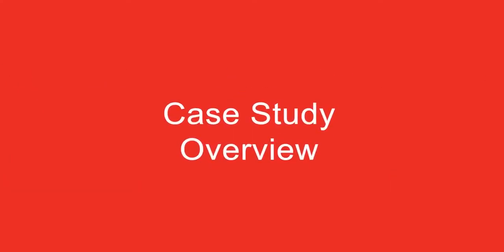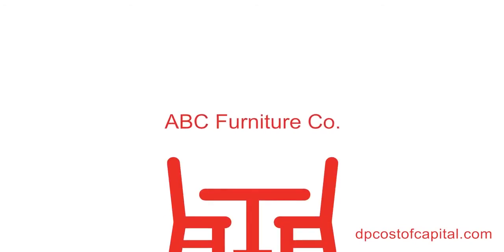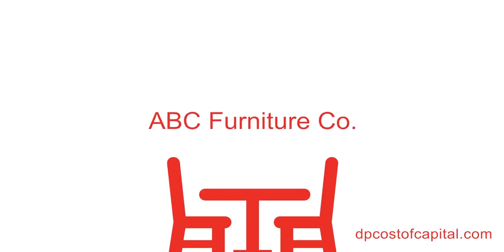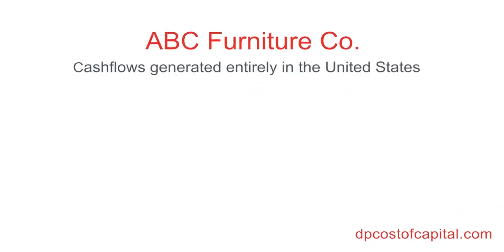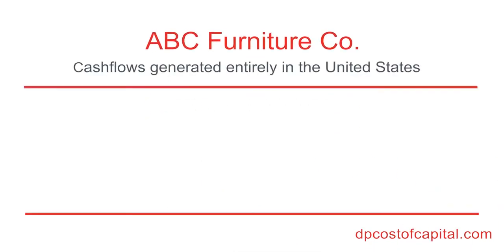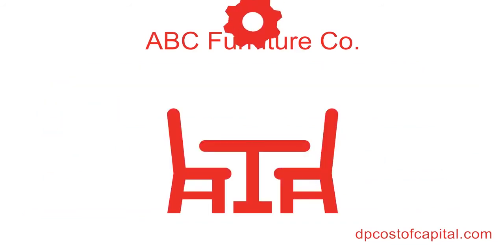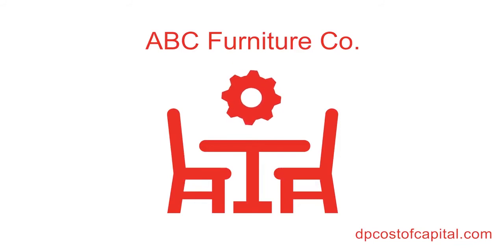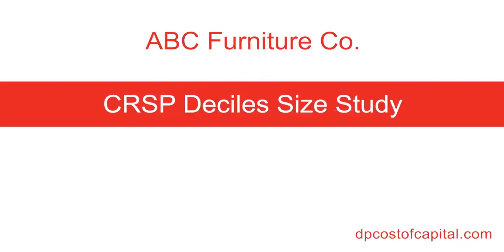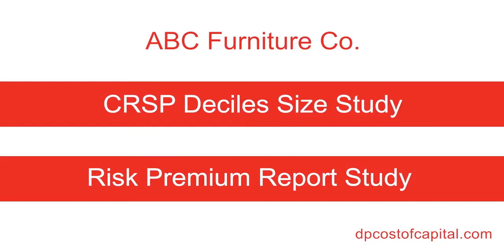Now let's do an overview of our case study. A U.S. institutional investor plans to make an investment in ABC Furniture Co., a household and office furniture manufacturer. ABC Furniture's cash flows are generated entirely in the United States, and the investor needs to estimate an appropriate weighted average cost of capital, or WACC, to price the investment. Today we will be estimating cost of equity, a component of WACC, for ABC Furniture using two different data sources: the CRSP Decile Size Study and the Risk Premium Report Study.